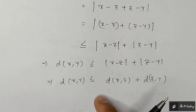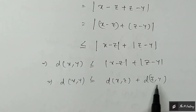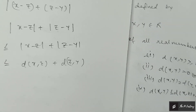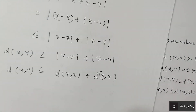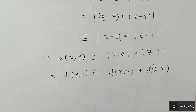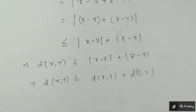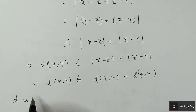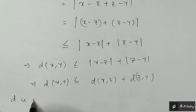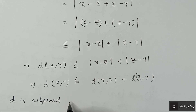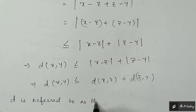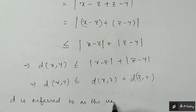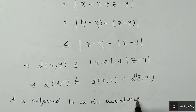As we have seen, d(x, y) has satisfied all four conditions — first condition, second condition, third condition, and fourth condition. We can clearly say d is referred to as the usual metric on R.